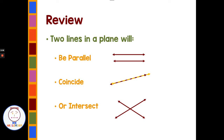When we have two lines in a plane, one of three things will happen. They'll either be parallel, meaning they'll go on forever without crossing. They'll coincide, where we have one line on top of each other and every point in common. Or the two lines intersect — they cross.